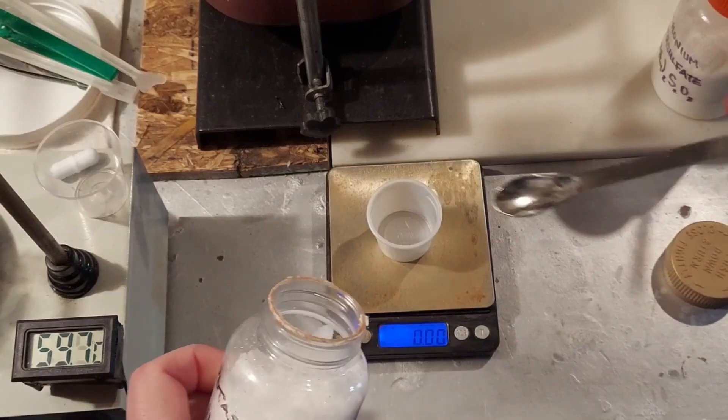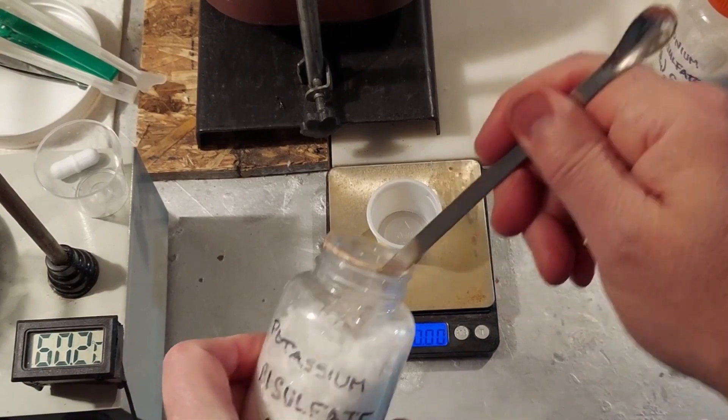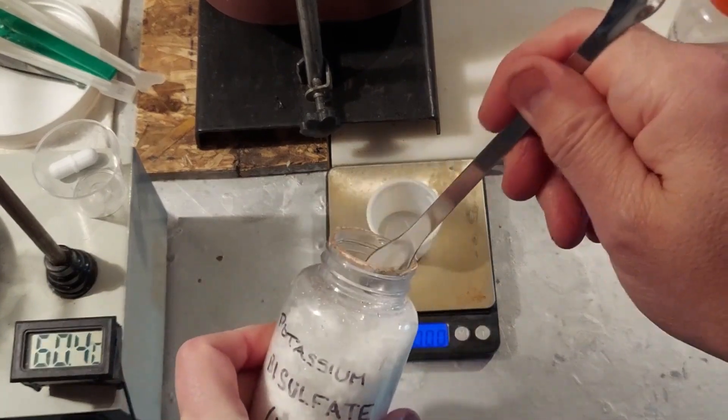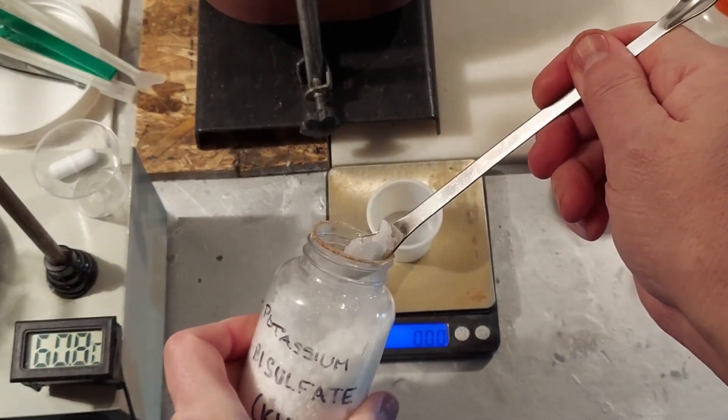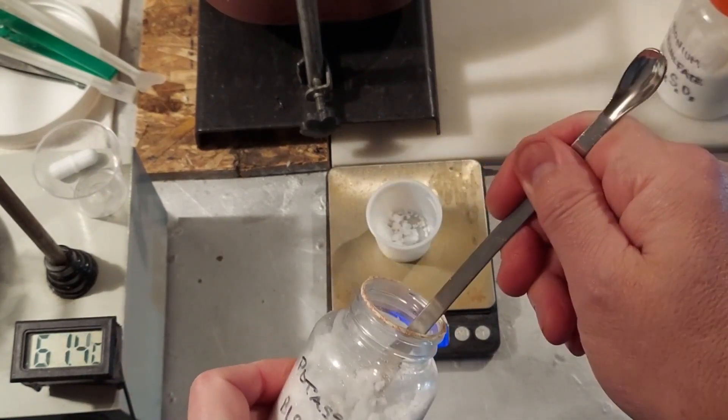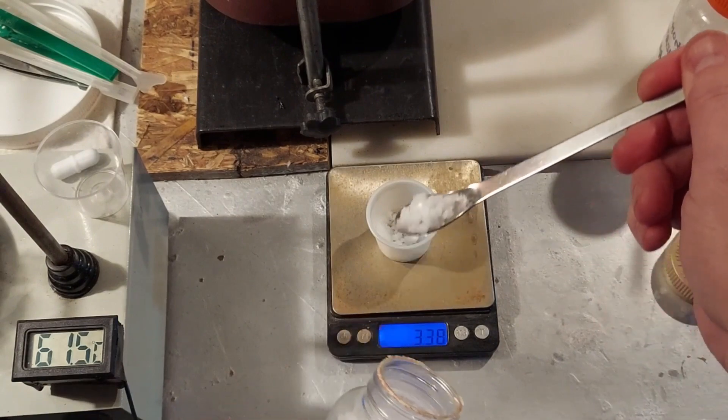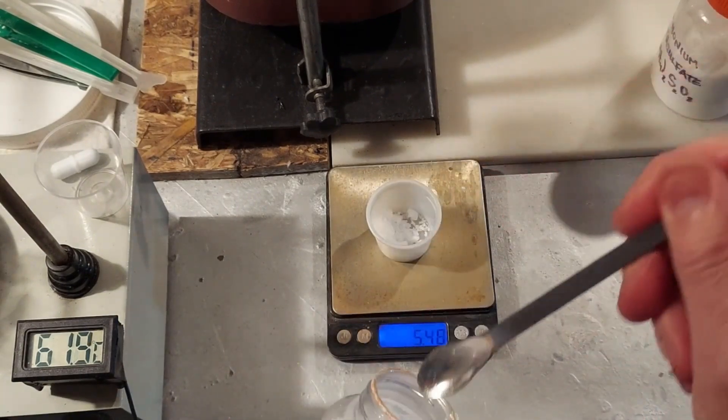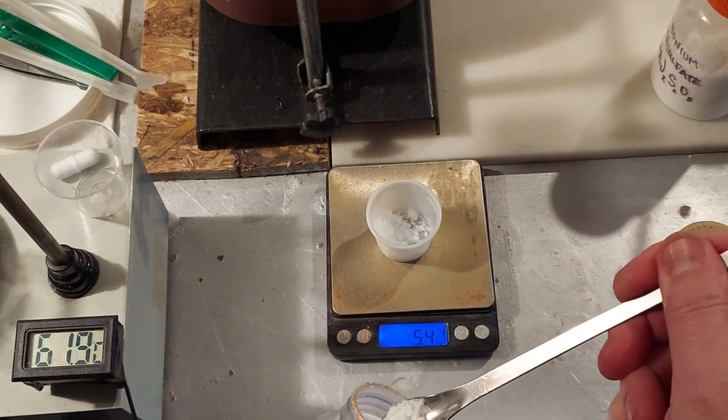While the ammonium persulfate is dissolving there, we're going to measure out our potassium bisulfate. And don't forget, this is a byproduct of making nitric acid when you use potassium nitrate and sulfuric acid. So don't throw it out. Save it. It can come in handy. All right, we want 12 grams here.